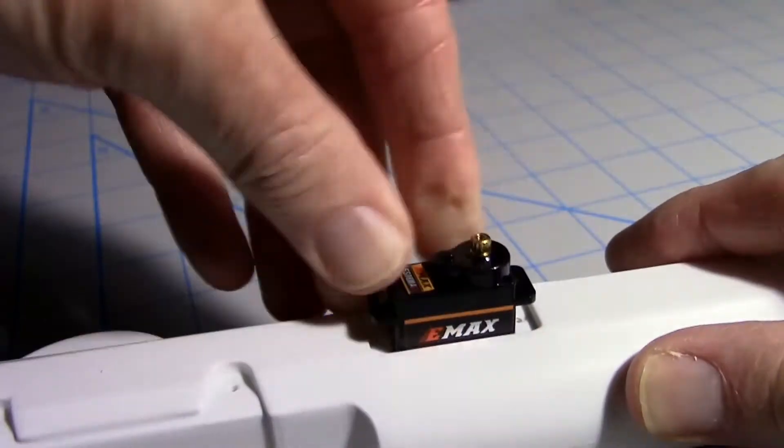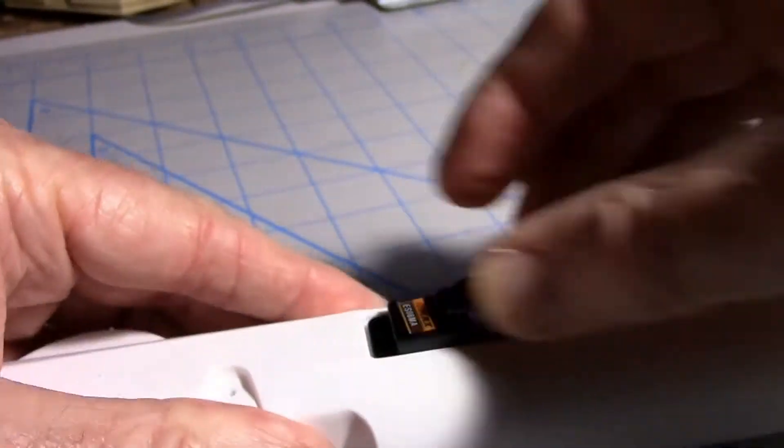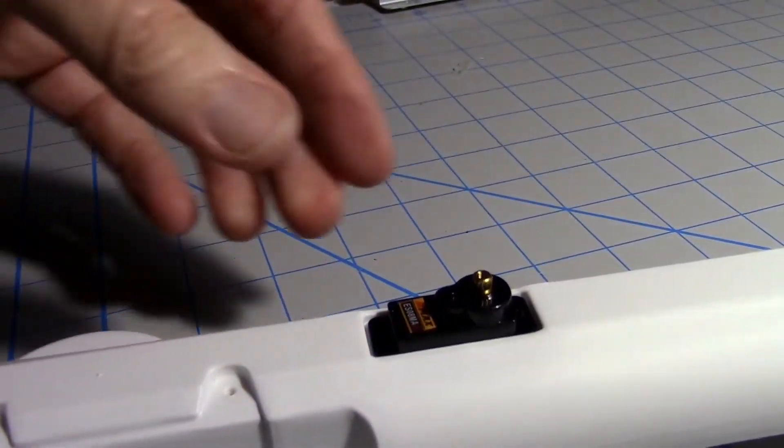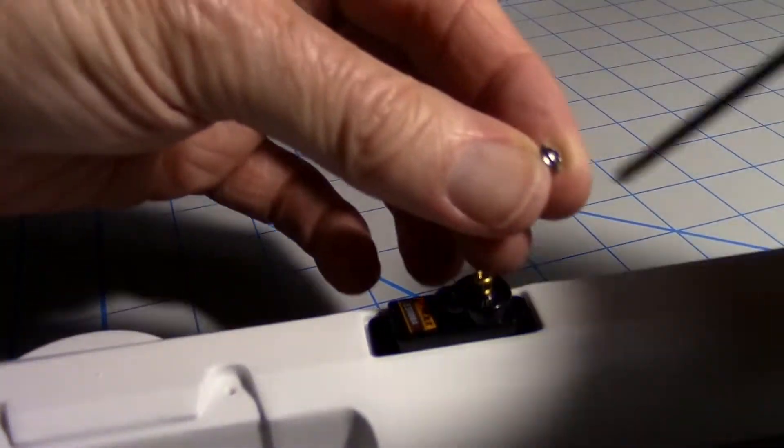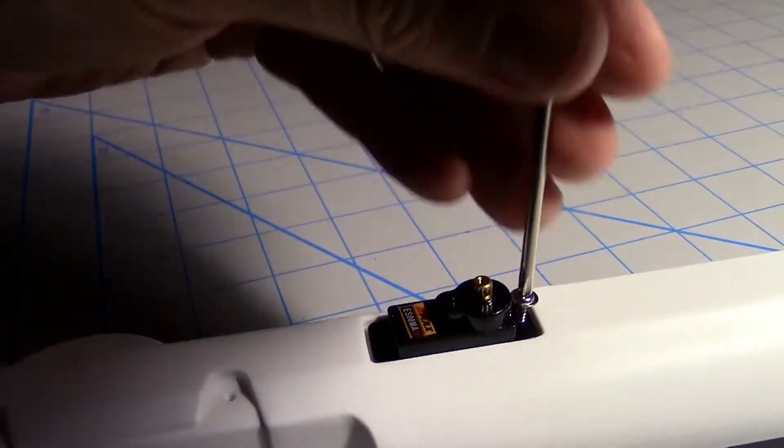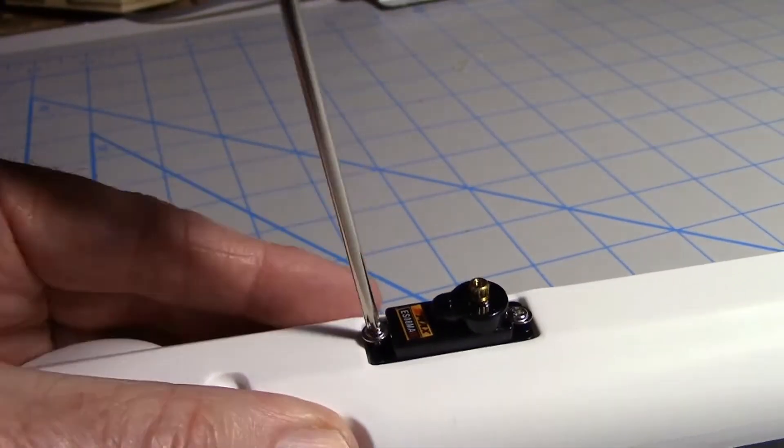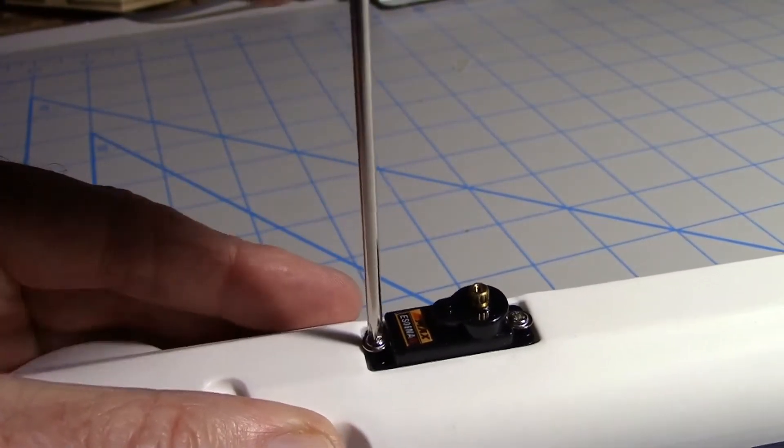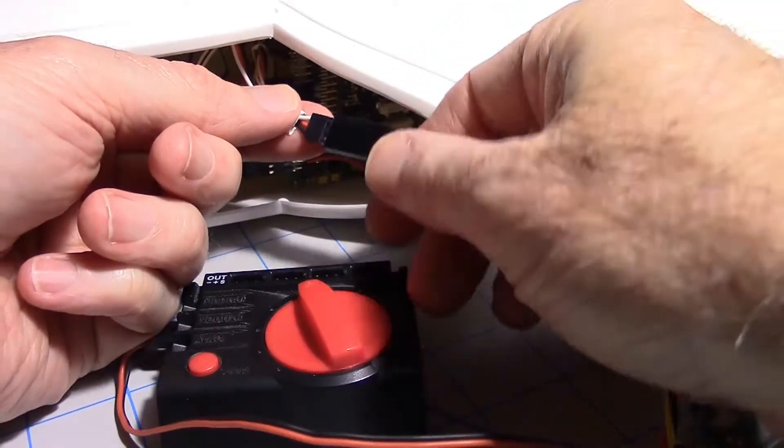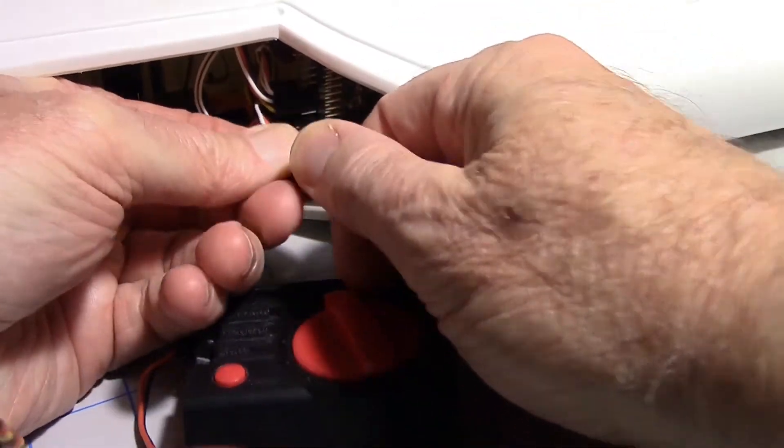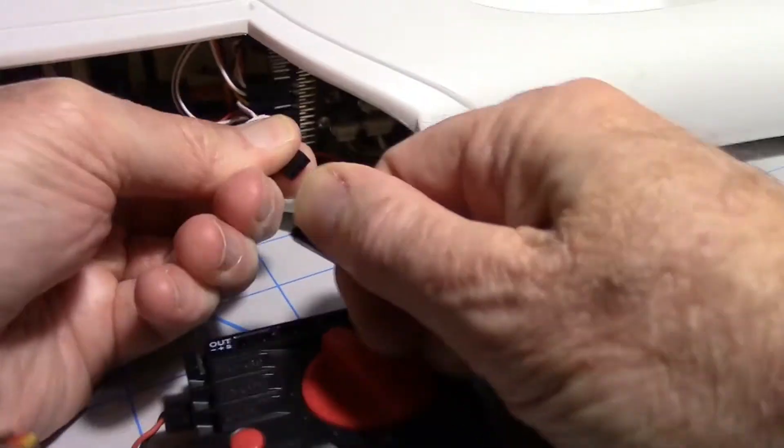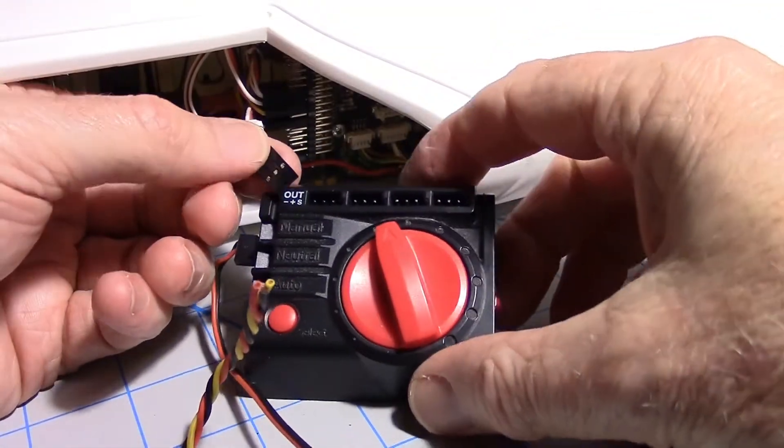Now I can put the same screws back in that were in it to start with. I'll take the fish wire off and plug it into the servo tester.